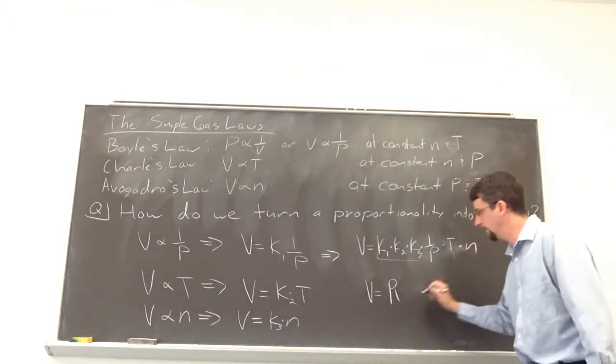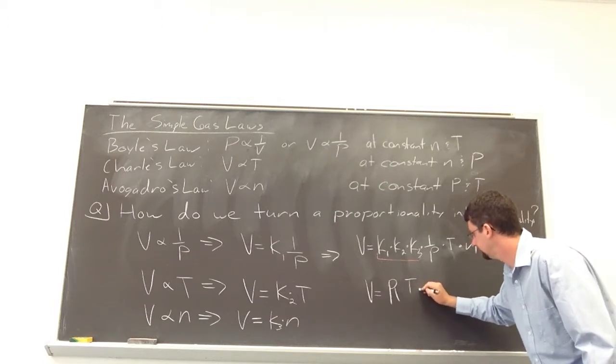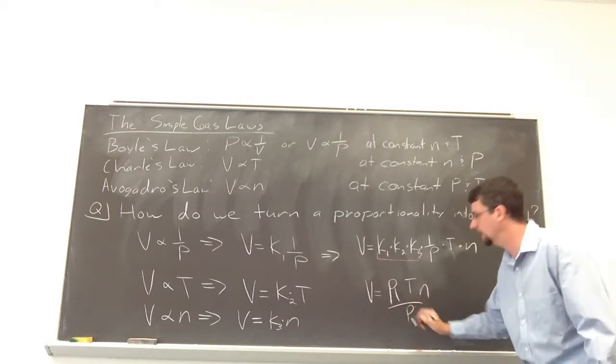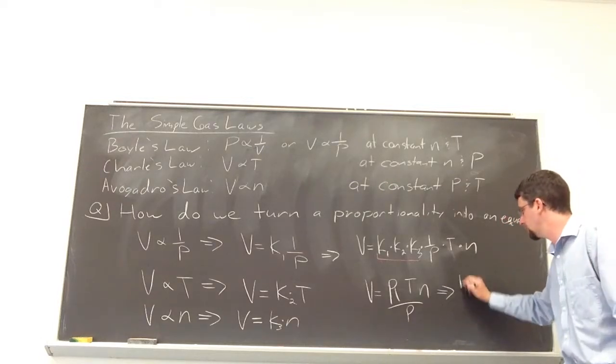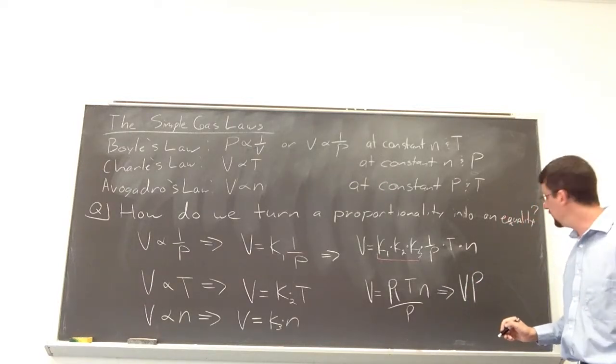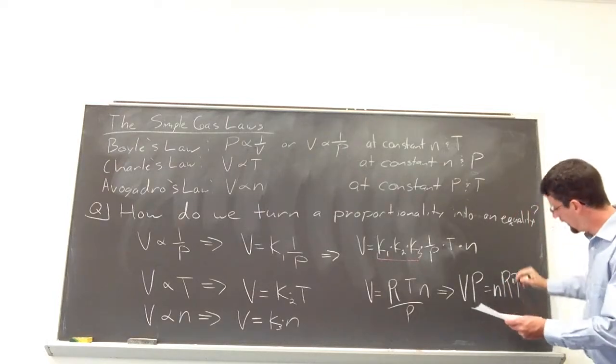So, we have R. If we move everything around, shuffle it around, we get T, N over P. If we manipulate that a little bit, it's probably more familiar to you from general chemistry to be PV equals NRT. Or, the ideal gas law.